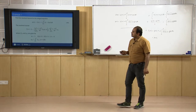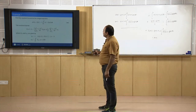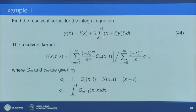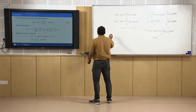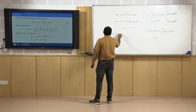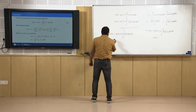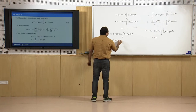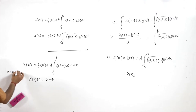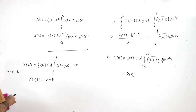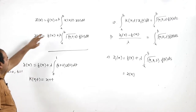Now that we have established uniqueness, let us start with the first example: find the resolvent kernel for the integral equation y(x) = f(x) + λ∫₀¹(x+t)y(t)dt. Here k(x,t) = x+t, a = 0, and b = 1. To find the solution we need to find the resolvent kernel γ(x,t,λ) = D(x,t,λ)/D(λ).